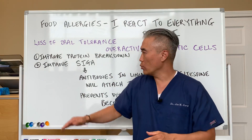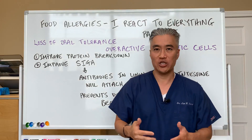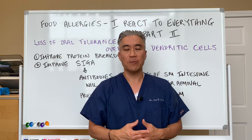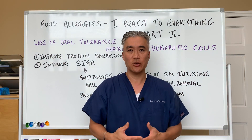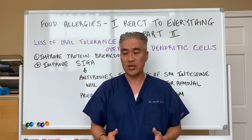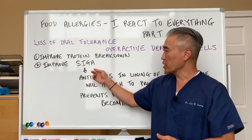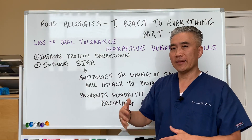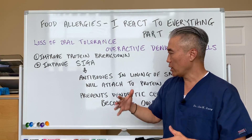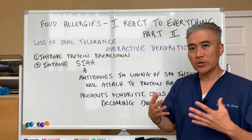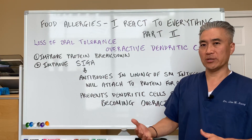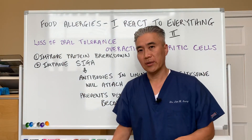Oftentimes people have low secretory IgA because of prolonged steroid use, chronic health conditions, digestive issues, poor immune function, or chronic infection. Checking your secretory IgA and raising it to a proper level will help protect your immune system from overreaction, especially from the dendritic cells.